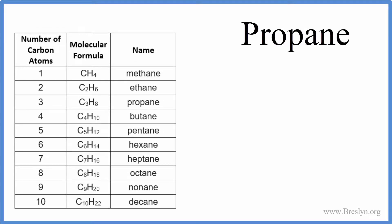To write the formula for propane, we see this ANE at the end. That means it's an alkane. Alkanes are made up of carbons and hydrogens. For propane, we have three carbons and eight hydrogens: C3H8.